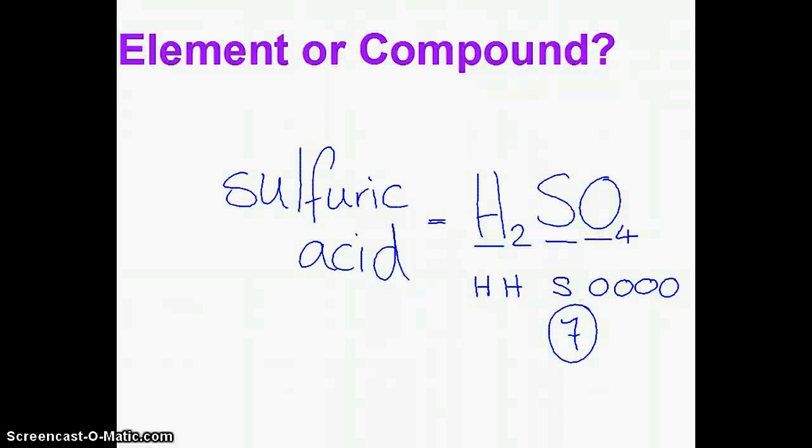So an element is anything where there's only one type of atom in each molecule. A compound is where there's a mixture of atoms in each molecule. And you can tell which atoms make up a molecule by looking at its formula. End of part three.